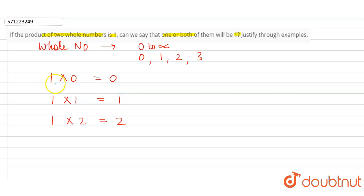...the product of two whole numbers can never be one, right? Because one times zero is zero, that is not equal to one. And one times one equals one, so we can say that when both...